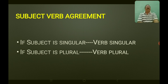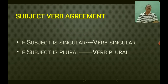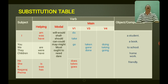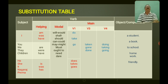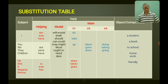Next is subject-verb agreement. If the subject of the sentence is singular, the verb must be singular. If the subject of the sentence is plural, the verb must be plural. Here you have a substitution table with various columns and rows. On the top you find the subject, in the middle you find the verb, and on the right side you have the object and complement. This is the basic pattern of an English sentence.